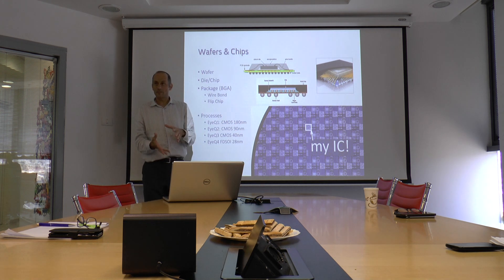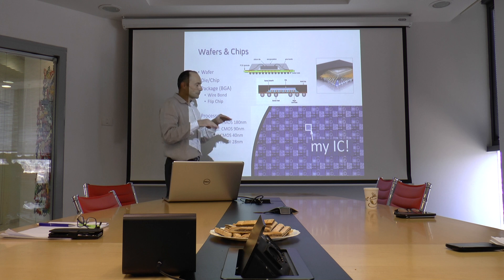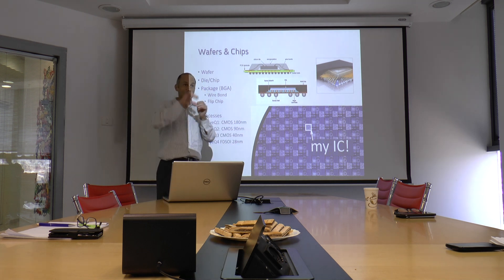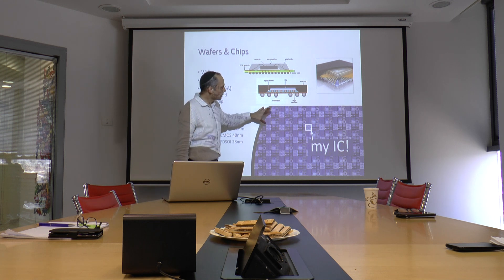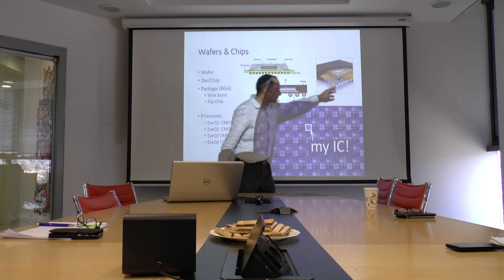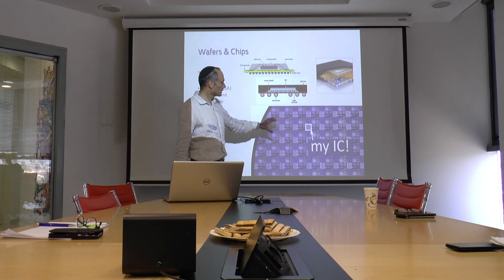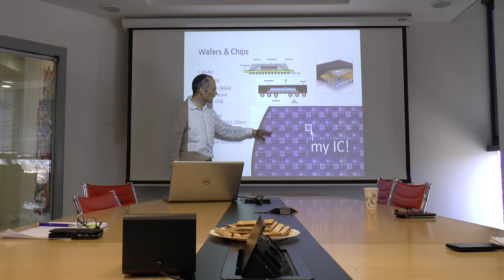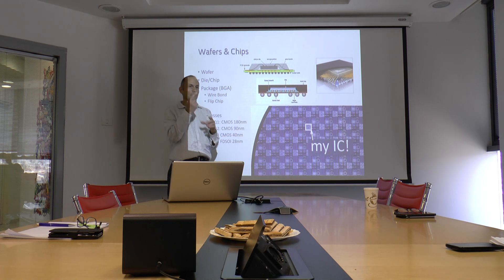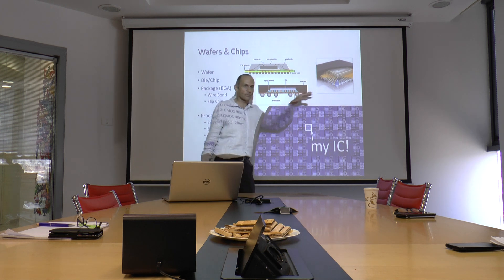Once you've designed the chip and done the back-end work, you need to make the physical chip. It's made of transistors and wires, manufactured on a giant circle called a wafer. On the wafer there are hundreds of chips. Our wafer makes one chip — the IQ — so all the squares on it are identical.